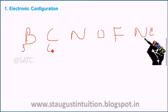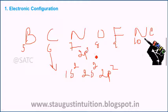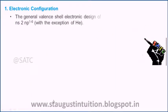Their atomic numbers are 5, 6, 7, 8, 9, and 10. For example, Carbon's configuration is 1s2, 2s2, 2p2. The configurations end in 2p2, 2p3, 2p4, 2p5, and the last one ends in 2p6. So the general valence shell electronic configuration of P-Block Elements is ns2np1-6.